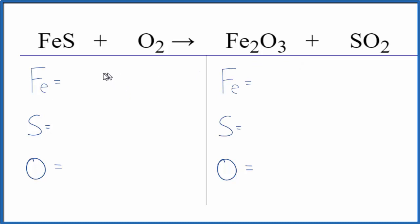So first thing we'll do we'll count the atoms up on each side. We have one iron, one sulfur, and two oxygens on the reactant side. On the product we have two irons, one sulfur, and then for the oxygens we have three plus two. So we have five oxygen atoms.